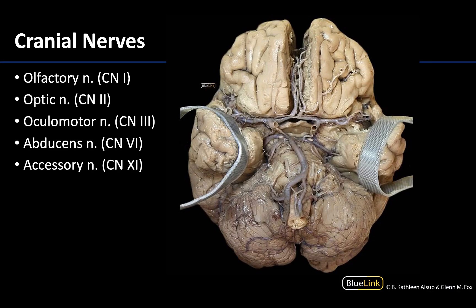We are starting with an inferior view of the brain. Now how this was cut, we can only see a few cranial nerves, but let's talk about the ones that we can see. Here you can see part of the olfactory tracks which are associated with cranial nerve 1. The olfactory bulbs have been cut on this particular dissection. These are located on the inferior portions of the frontal lobe. We're looking at an inferior view.